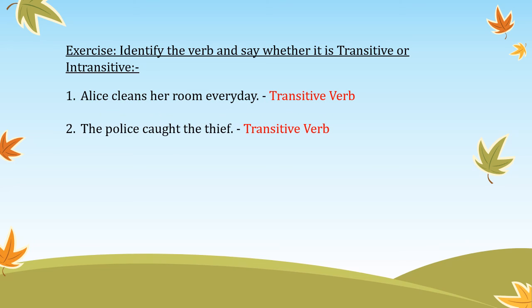'The police caught the thief.' Here, the subject is police, caught is the action, and the action is transferred to the thief, so the thief is the object — this is also a transitive verb. 'The sun shines brightly.' In this sentence, the subject is the sun, shines is the action, but the object is missing. So this is an intransitive verb.